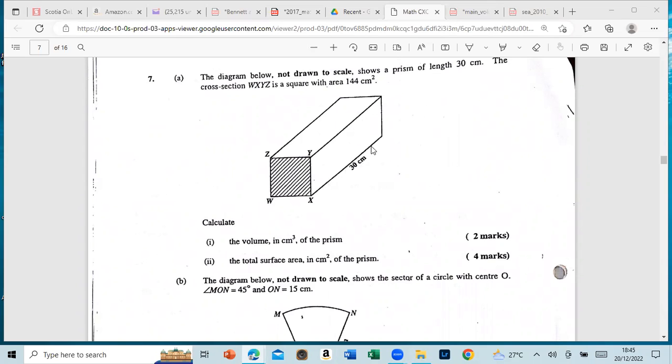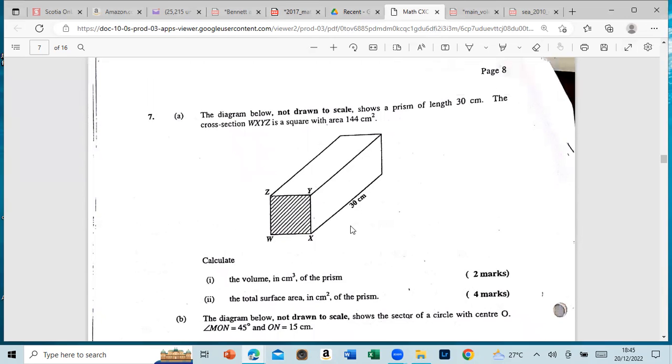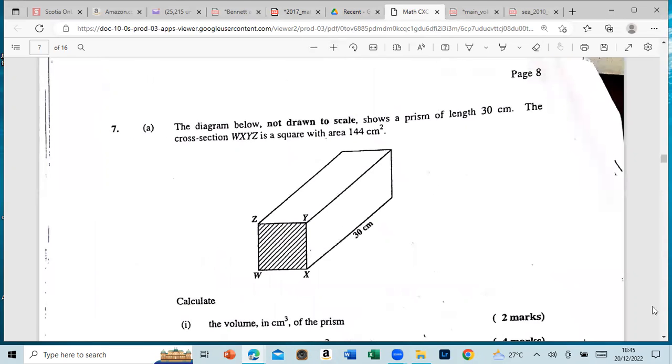The cross section WXYZ is a square with area of 144 centimeters square. They give us that information and the first thing they ask is for the volume of this.